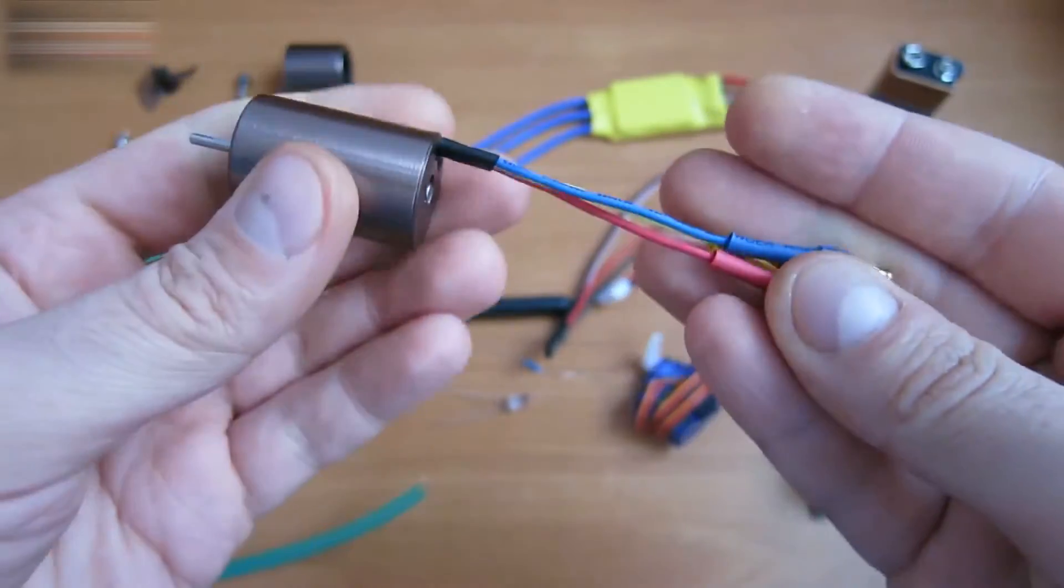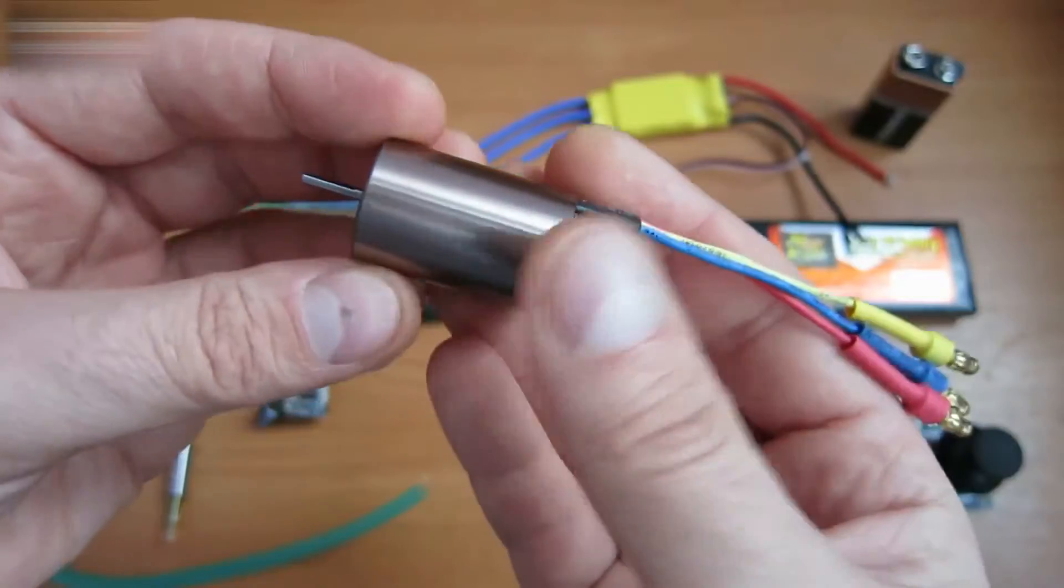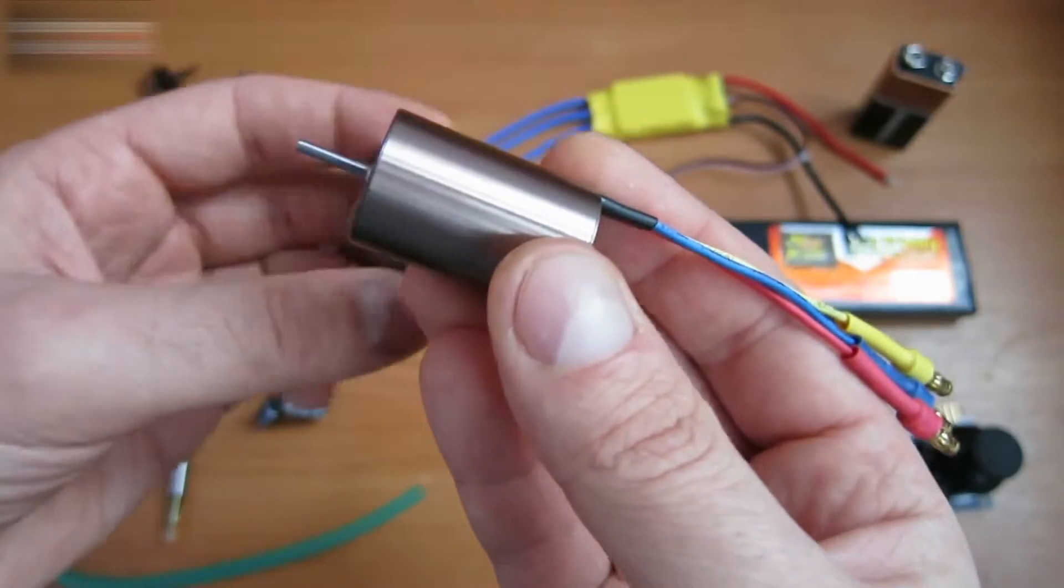A commutator motor has two wires for power, while a brushless one has three. It will get very hot when running, so you need to cool it.